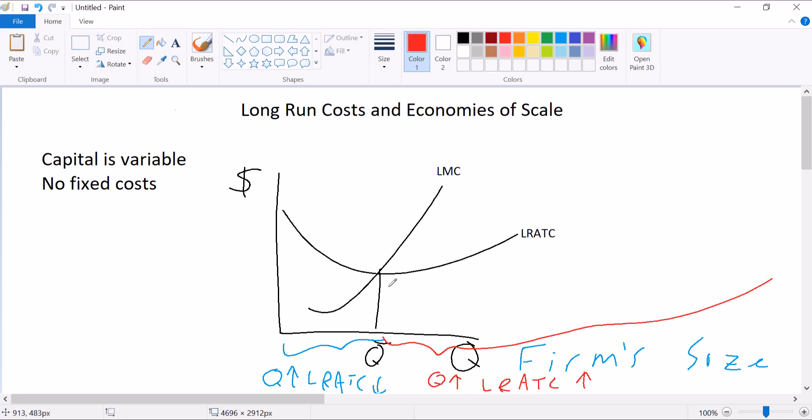And this range over here, after this Q down here, bigger firms will have higher average costs in the long run. And so when you see something like this, this middle area down here, all these low costs, that's probably where you're going to see your industry settle down, will be with firms in that size range. Because a firm in that range can push out small mom and pop shops with high costs. A firm in that range can push out firms that have gotten too big and expanded beyond their capacity.